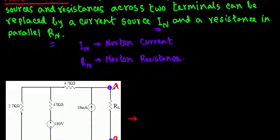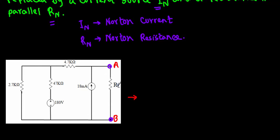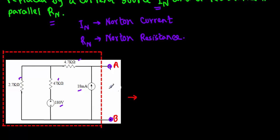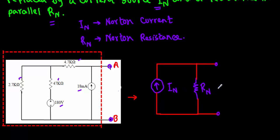Let's say we have a big circuit containing four resistors, one independent voltage source and another independent current source. Norton theorem states that if I remove the load resistance RL across terminals A and B, the circuit inside this bounded region will be our remaining circuit. I can convert this whole circuit into a single current source IN with a single resistance in parallel. This circuit drawn based on Norton theorem is known as the Norton equivalent circuit.